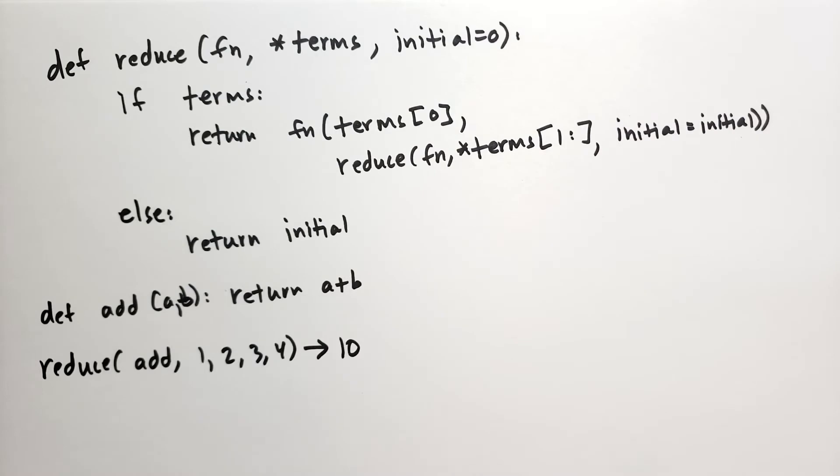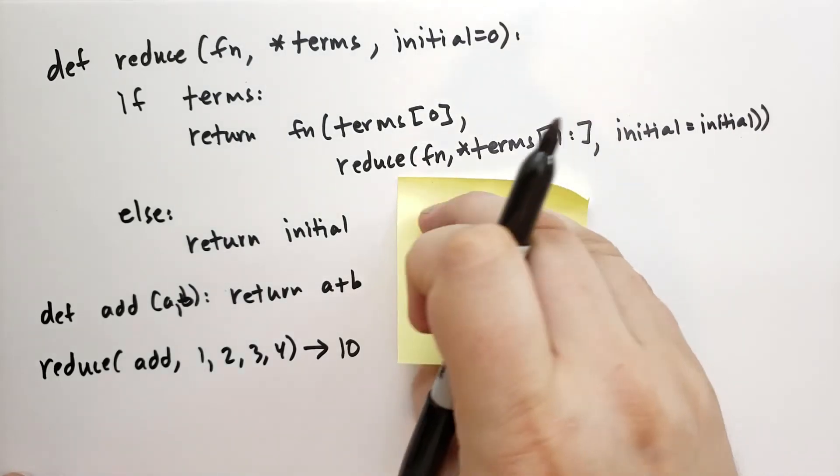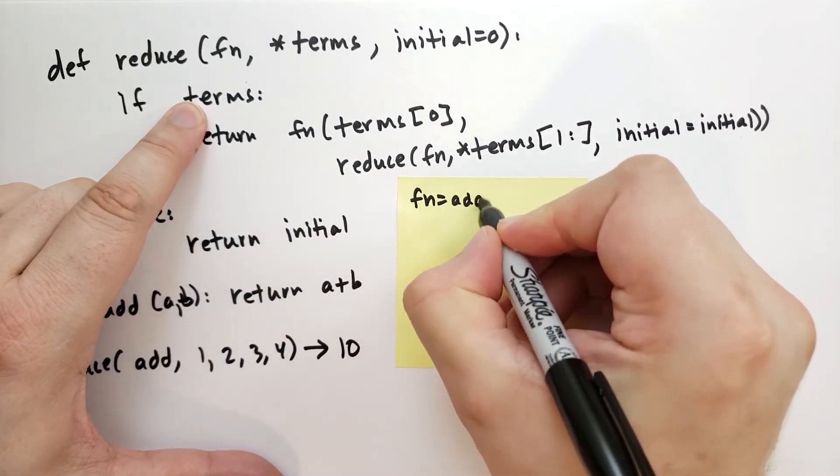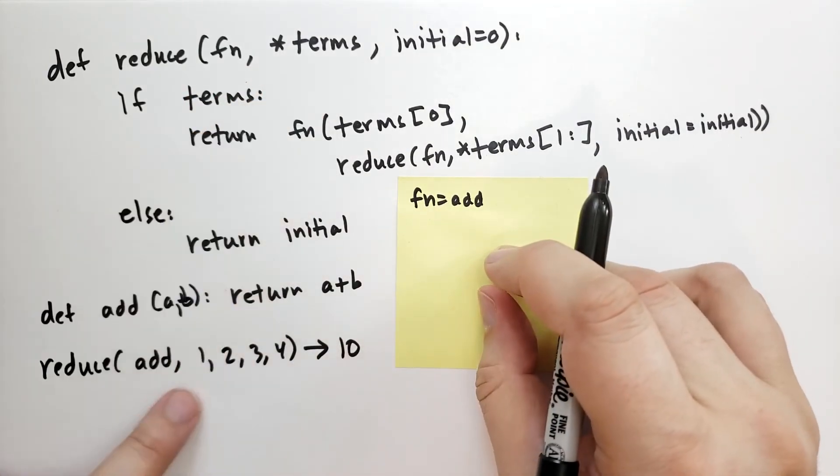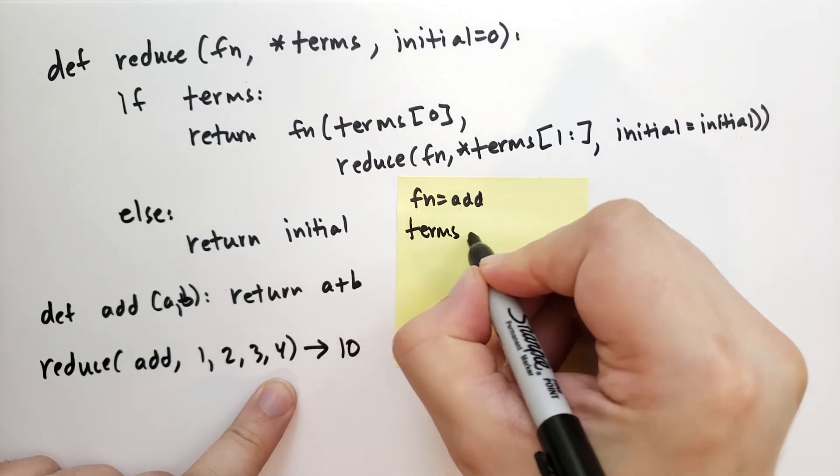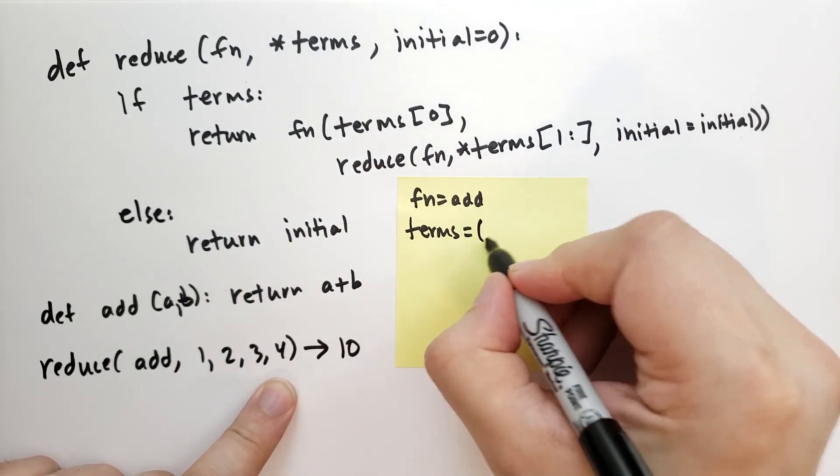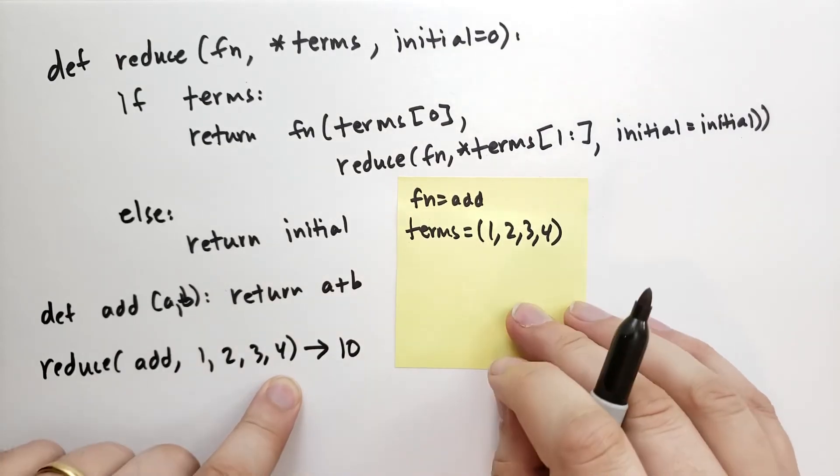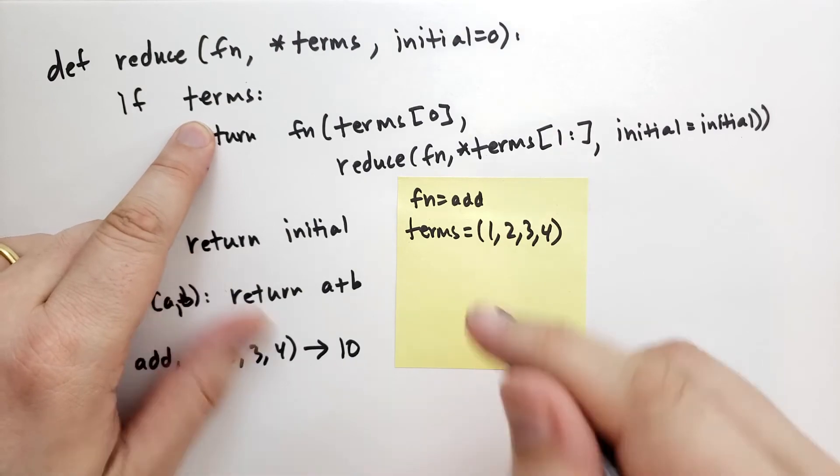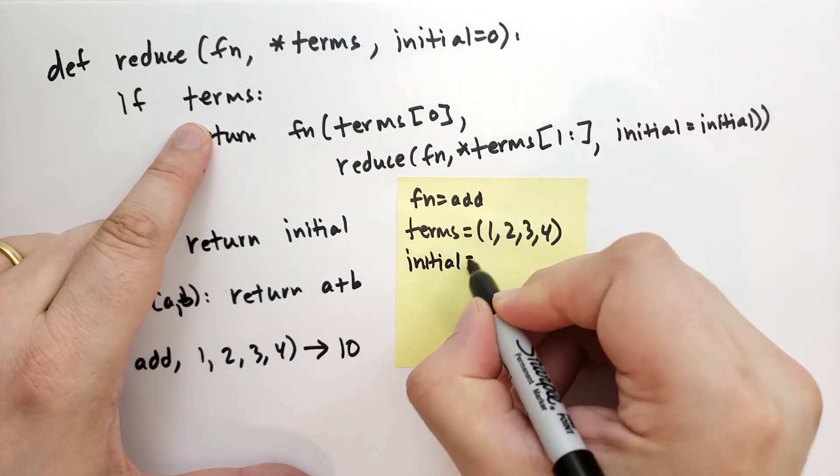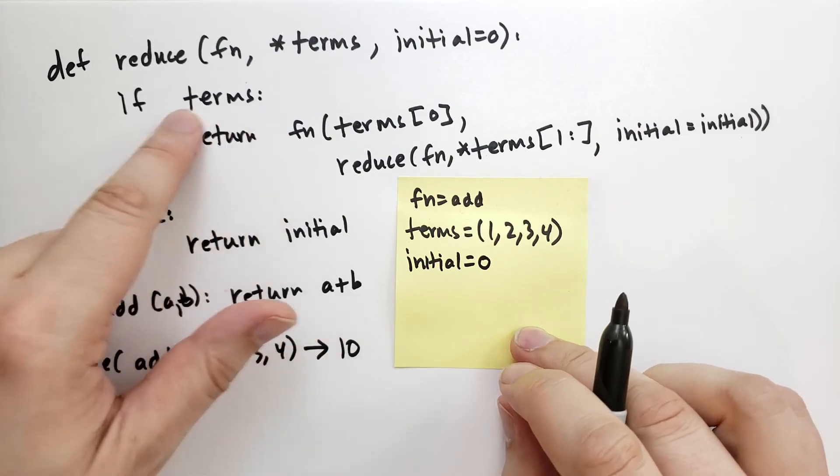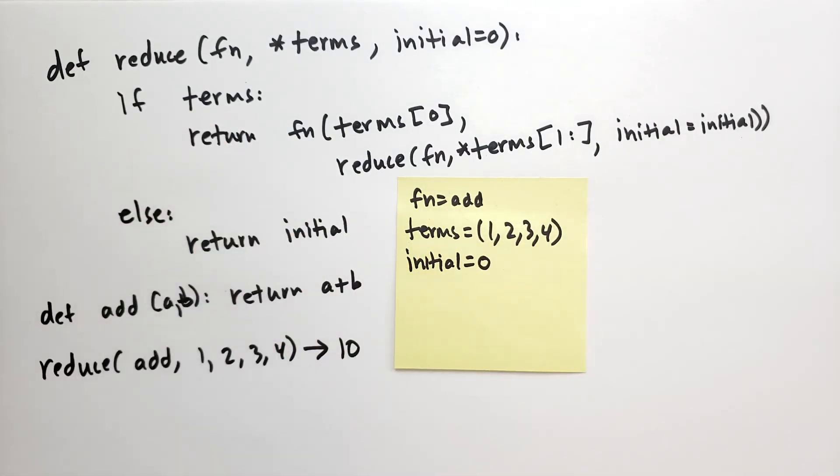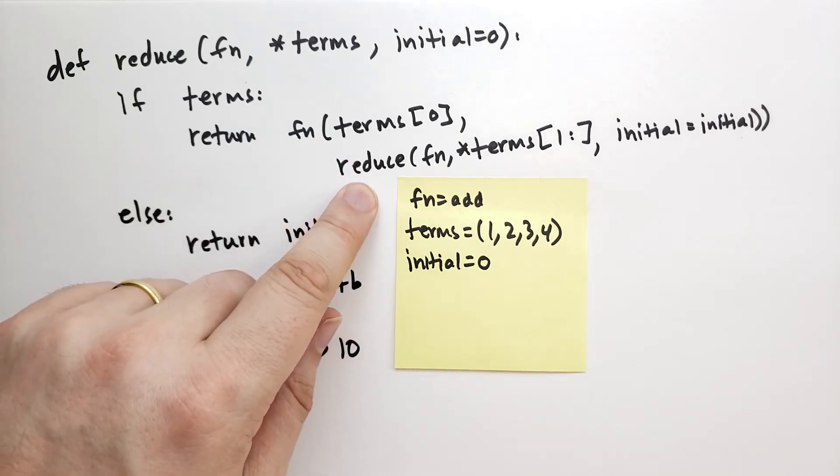So the first time we call reduce, the function is add, and then terms is going to soak up all the rest of the terms. If there are terms, initial is equal to 0 because we didn't specify it. If there are terms, and indeed there are terms, then we're going to return this function called with a, reduce of that. So let's go to the next call of reduce.